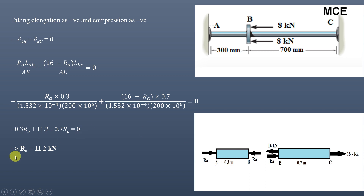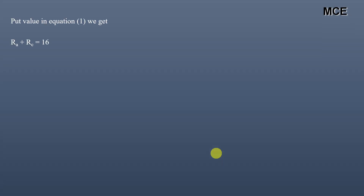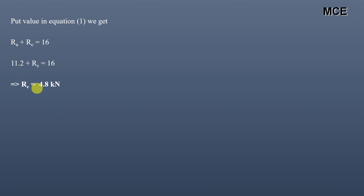Since RA is positive, our assumed direction is correct — RA acts towards the right. To find RC, substitute RA = 11.2 kN into equation 1: RA + RC = 16, giving RC = 16 − 11.2 = 4.8 kN. Since RC is also positive, its assumed direction is correct — RC also acts towards the right.